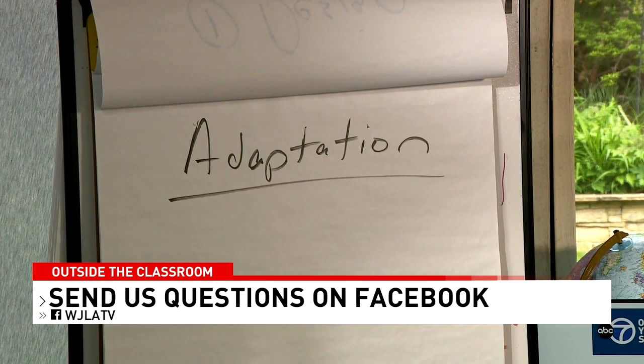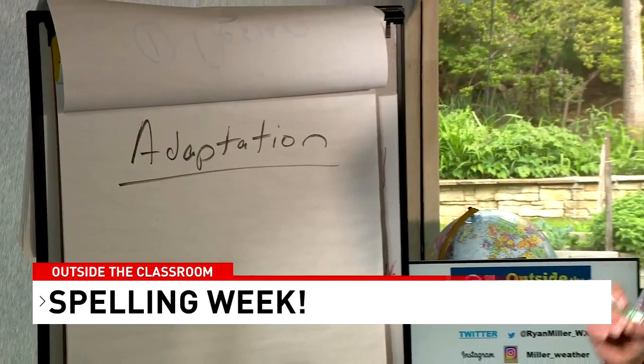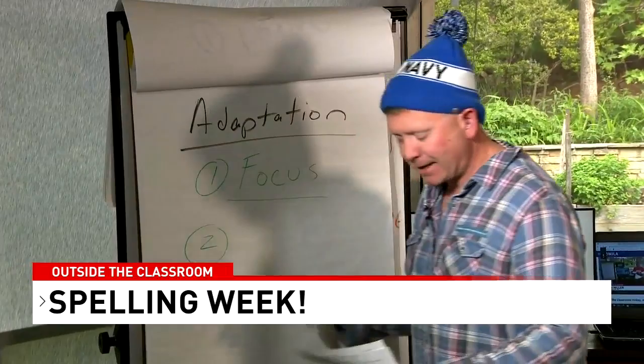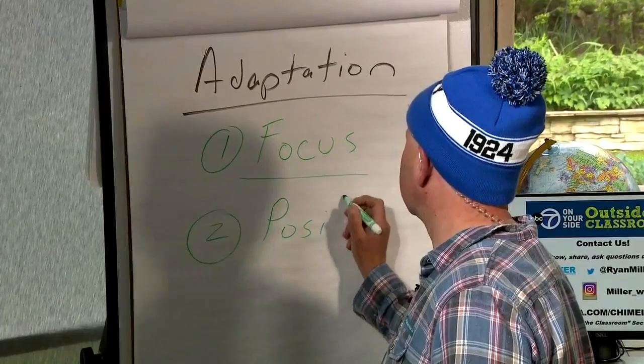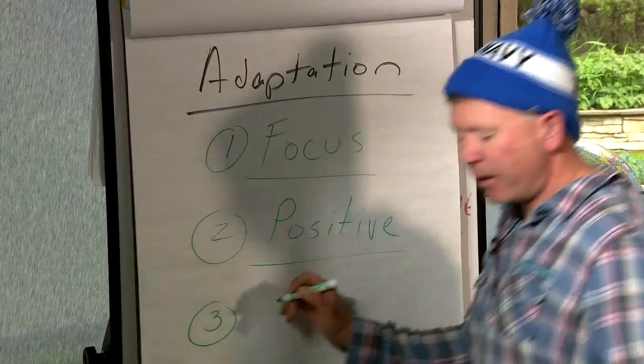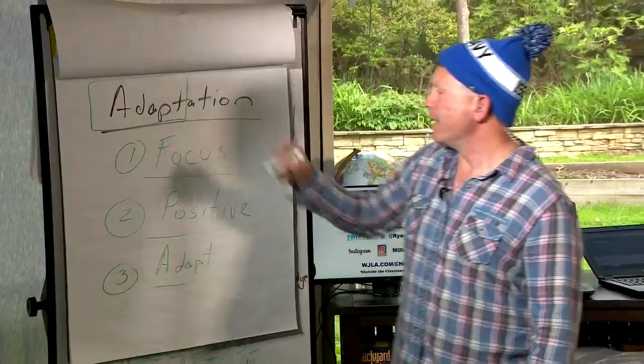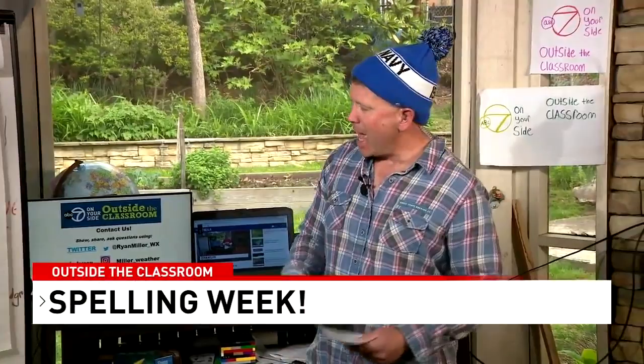We also have some words to work on spelling together. For today, our words are: number one — focus; number two — positive; and number three — adapt, which is the root word in adaptation. I'm not an English teacher, but nevertheless those are our three words to practice spelling today and to start thinking about a definition of adaptation.